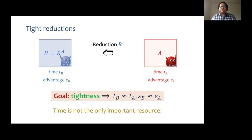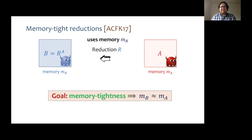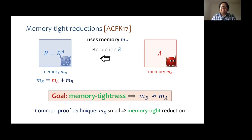But time is not the only important resource. Another resource which is important is memory, as pointed out by Auerbach et al. in Crypto 2017. This means that we can now enhance the picture by also taking into account the memory complexity of the adversary. This leads us to an analogous definition of memory tightness, which means B uses memory very close to that of A. Note that the memory complexity of adversary B is the memory complexity of A plus the extra local memory complexity of the reduction R.